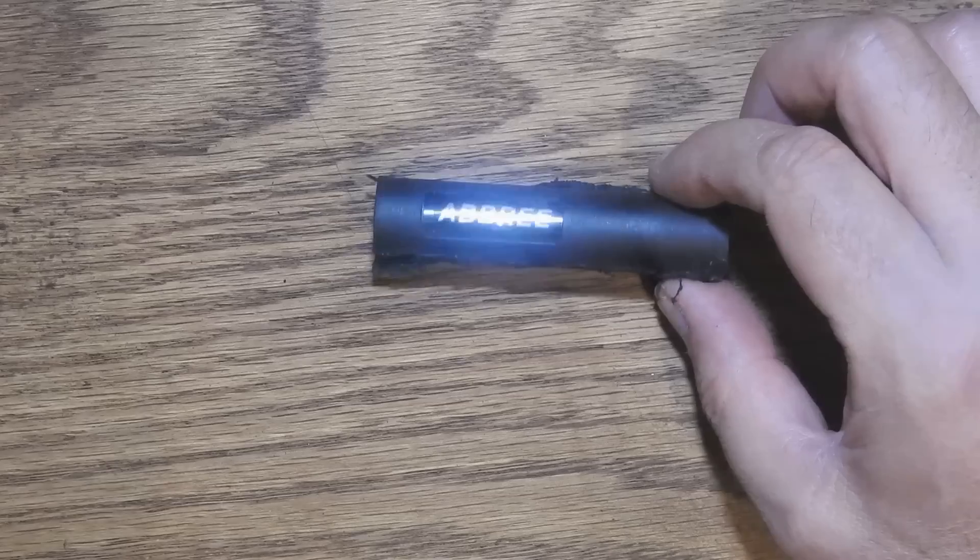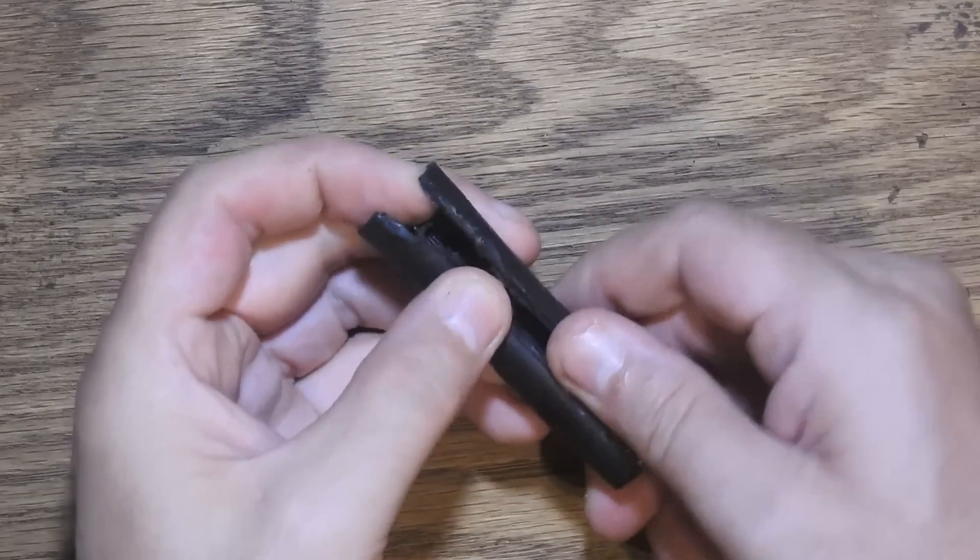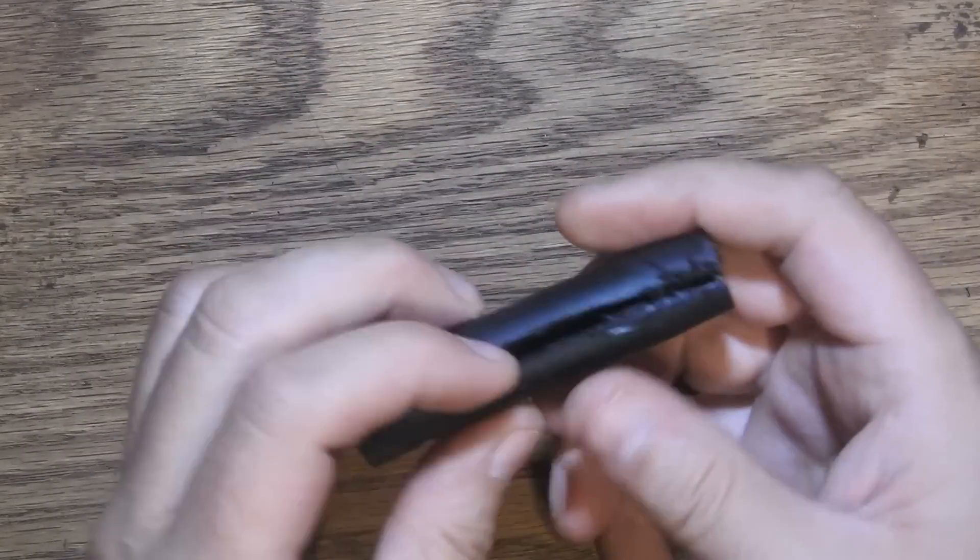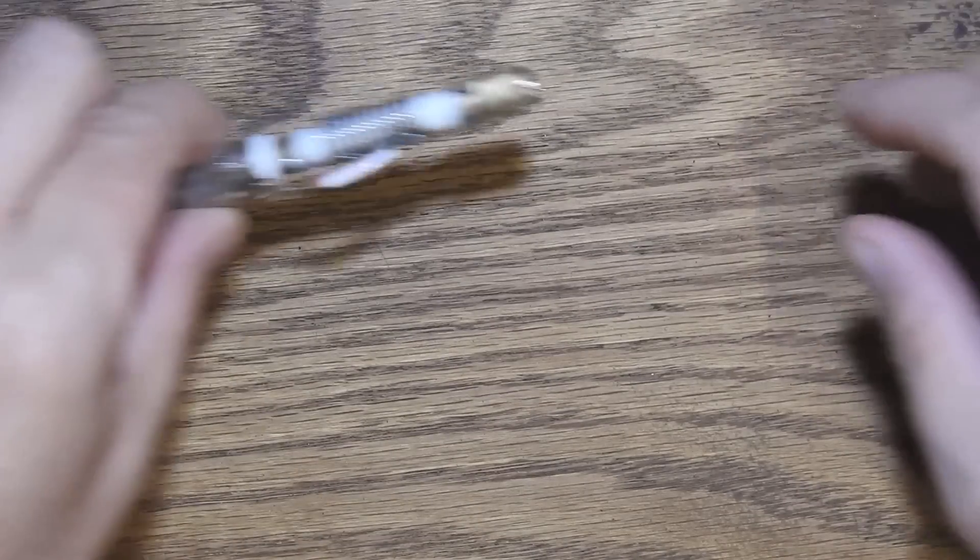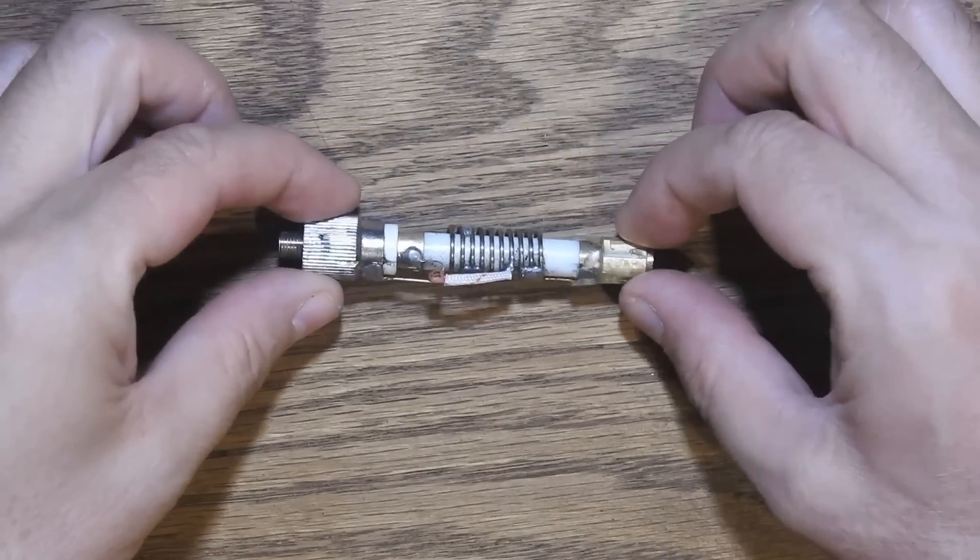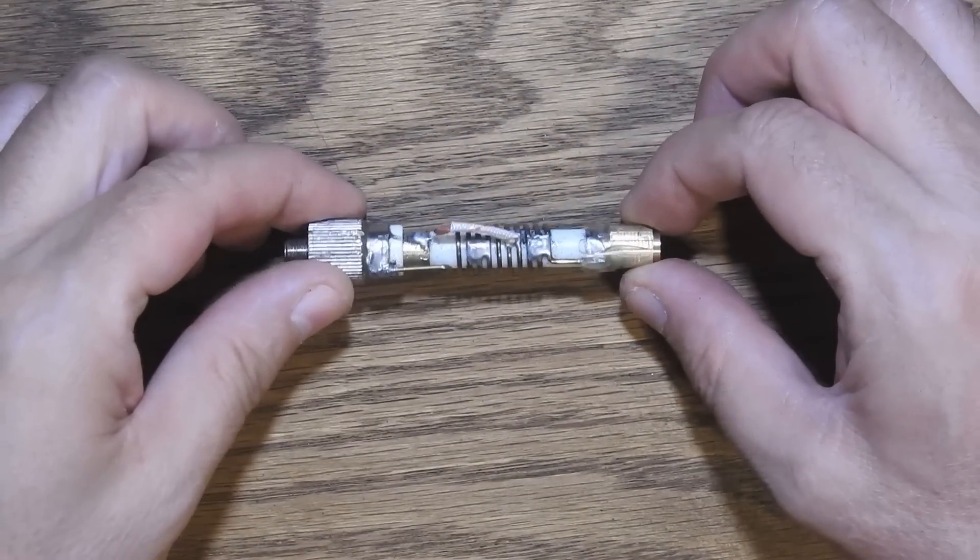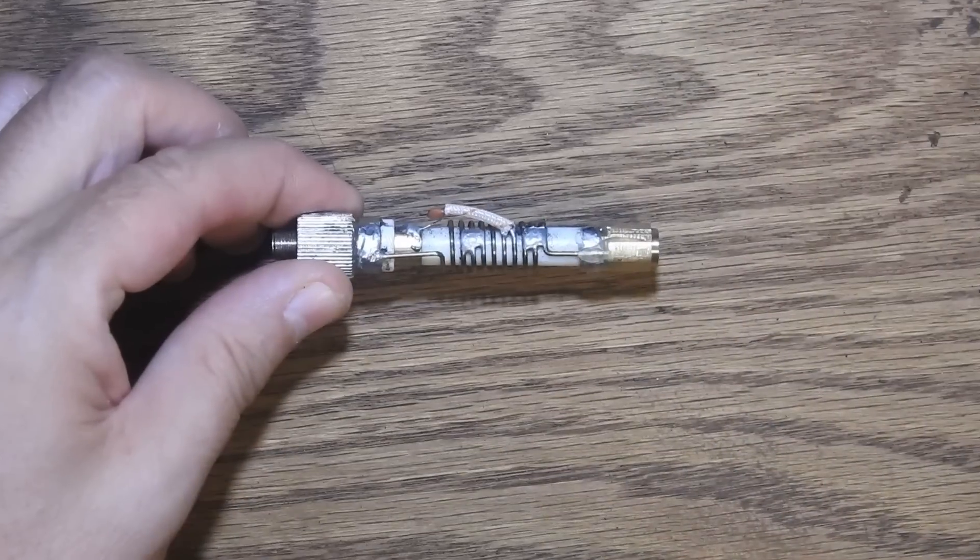Okay. Here it is. I cut it open. So what was inside? This is what was inside. There actually is a coil. And a capacitor.